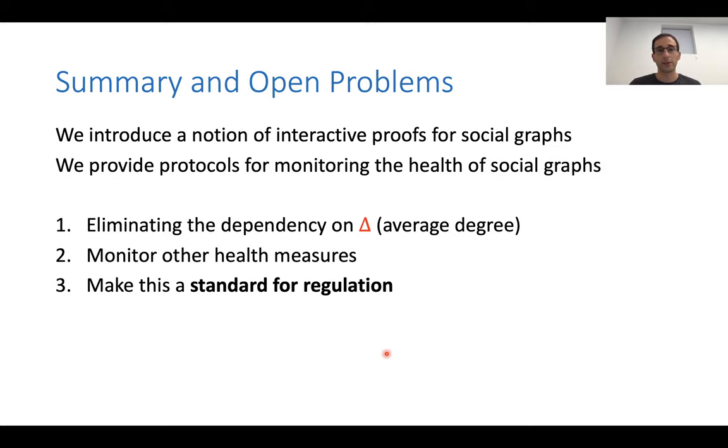Just to summarize some open problems, we introduced a new notion of interactive proofs for social graphs. We provided protocols for monitoring the health social graphs in this model. One open problem is to eliminate this dependency on delta. I think the dependency on tau is inherent, but the dependency on delta, the average degree, I'm not sure that it's inherent. Can you use our protocol to monitor other more important health measures? And finally, can we make this part of a standard, a part of how we regulate social companies? Thank you very much.